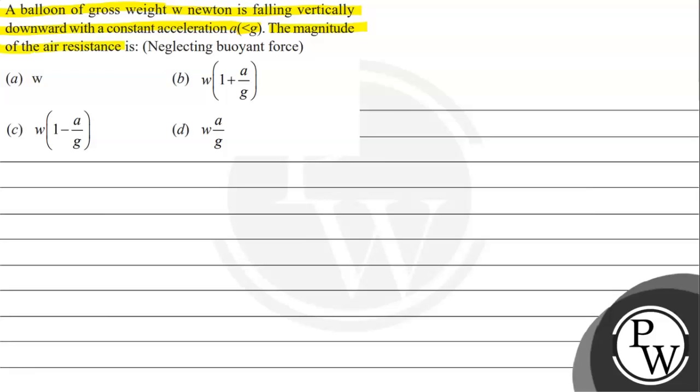The magnitude of the air resistance is, neglecting buoyant force. Option a: w, option b: w(1 + a/g), option c: w(1 - a/g), option d: wa/g.